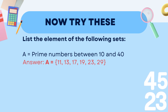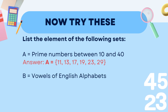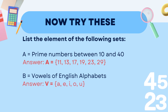In case anyone forgot, prime numbers are numbers that can either be divided by themselves or 1. For set B, it's asking for the vowels of the English alphabet. You write capital B, put an equals sign, open curly brackets, and list the vowels: A, E, I, O, U.